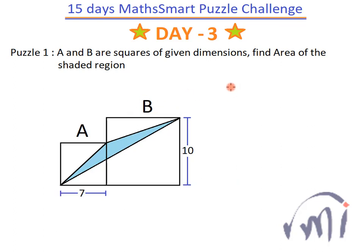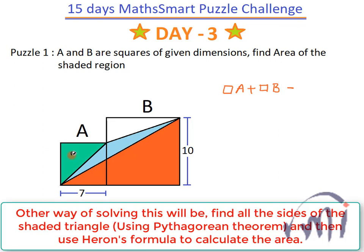So the area of the shaded region will actually be the sum of the areas of square A and square B, minus the area of this triangle, minus the area of this triangle, and minus the area of this triangle. Let me name them as C, D, E, F, G and H.